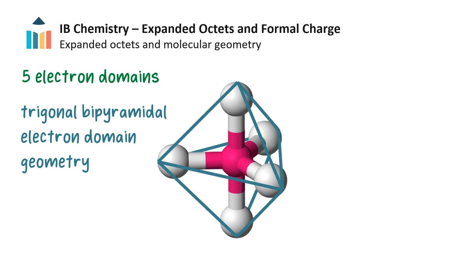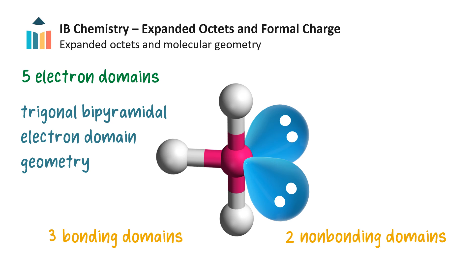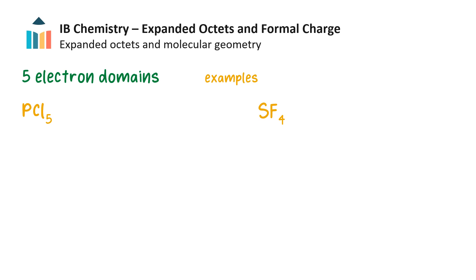Five electron domains will orientate themselves in a trigonal bipyramidal electron domain arrangement. The molecular shape will depend on how many of these electron domains are bonding and how many are non-bonding — whether there are 5 bonding domains, 4 bonding and 1 non-bonding, 3 bonding and 2 non-bonding, or only 2 bonding and 3 non-bonding. Two classic examples of compounds with 5 electron domains are phosphorus pentachloride and sulfur tetrafluoride.